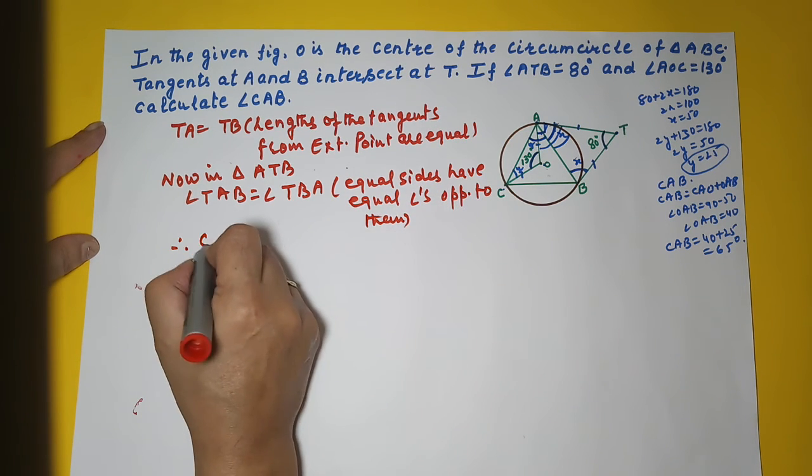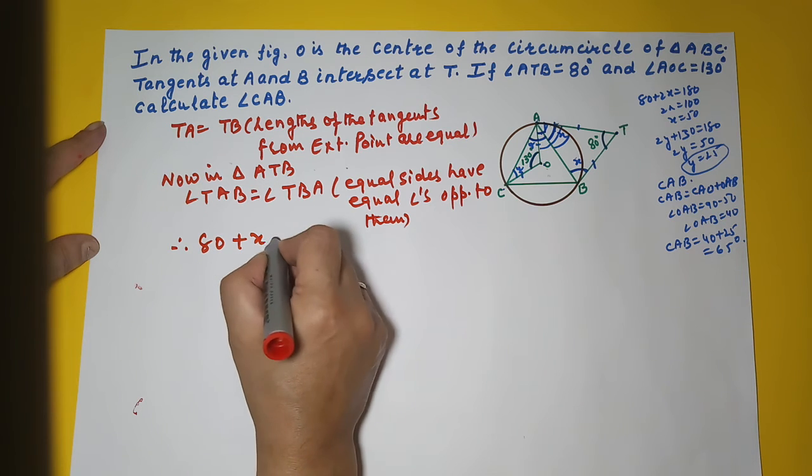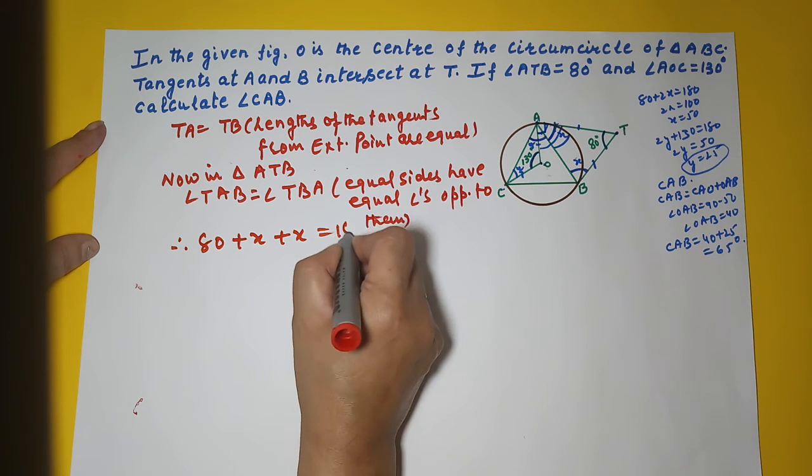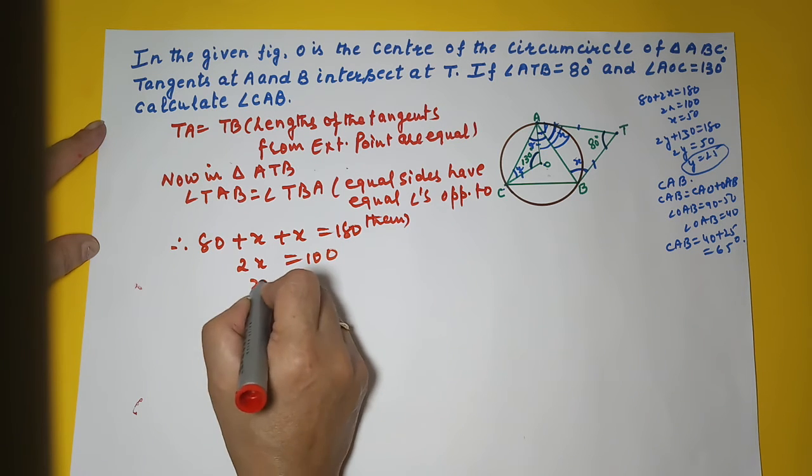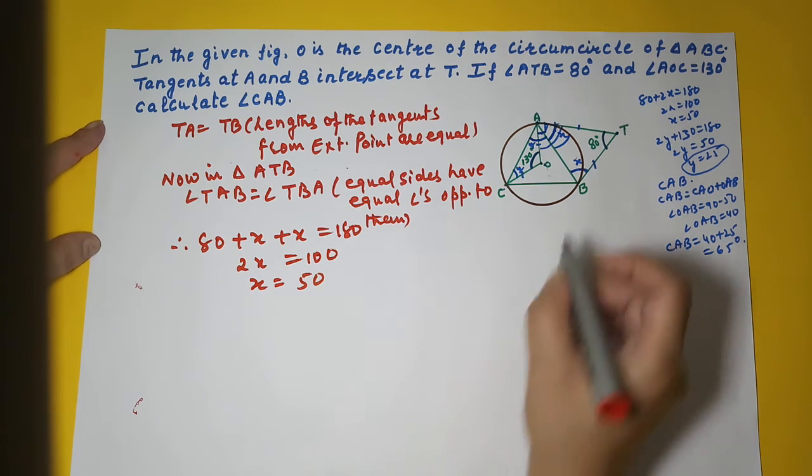Therefore, 80 plus X plus X equal to 180, 2X equal to 100, or your X equal to 50. You got your X as 50.